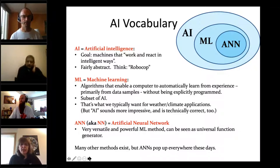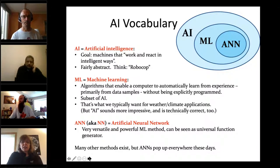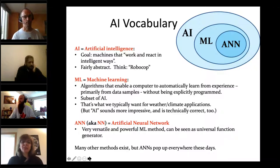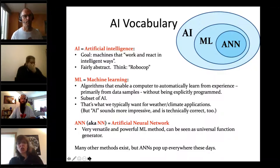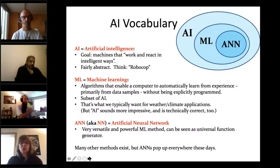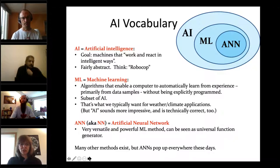Traditionally, AI means creating machines that work and react in intelligent ways — a fairly abstract concept. Think RoboCop: your independent robot walking around, finding its way in the world and thinking. That's artificial intelligence, and that's usually not what we're talking about. Usually we're talking about machine learning, which is just a subset of this much more abstract AI concept.